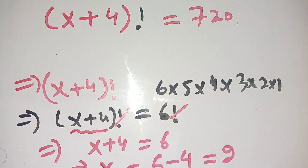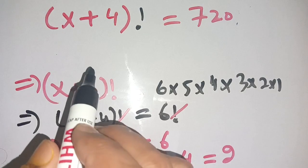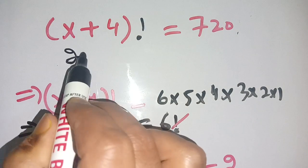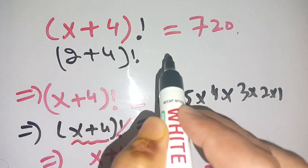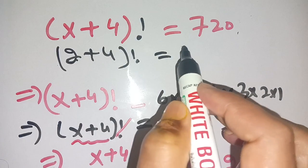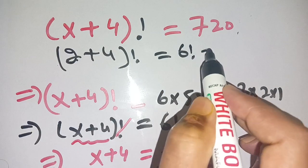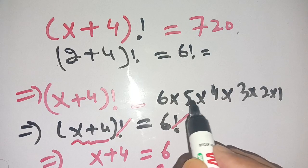On substituting the value of x is equal to 2 here, we get 2+4 factorial is equal to... 2+4 is equal to 6 factorial. And we know that 6 factorial is 6 times 5 times 4 times 3 times 2 times 1.